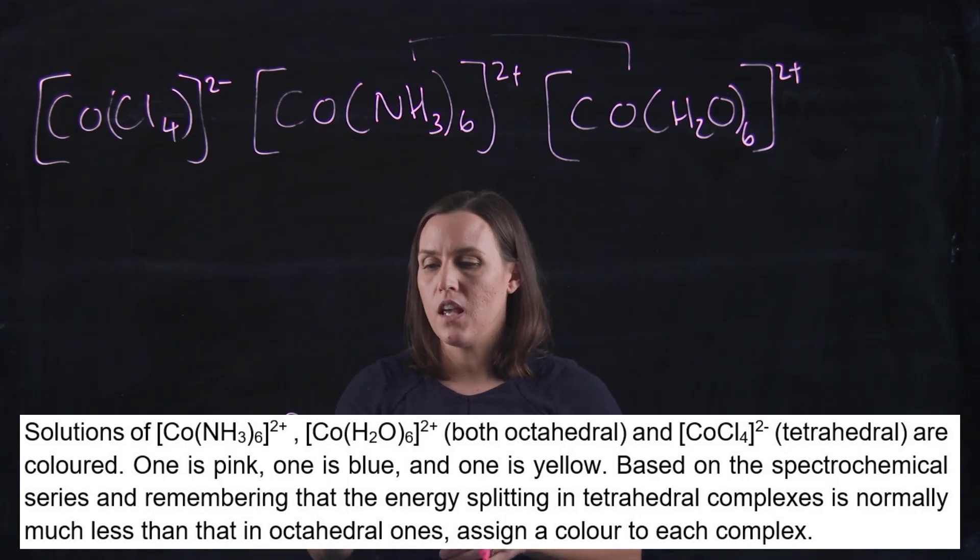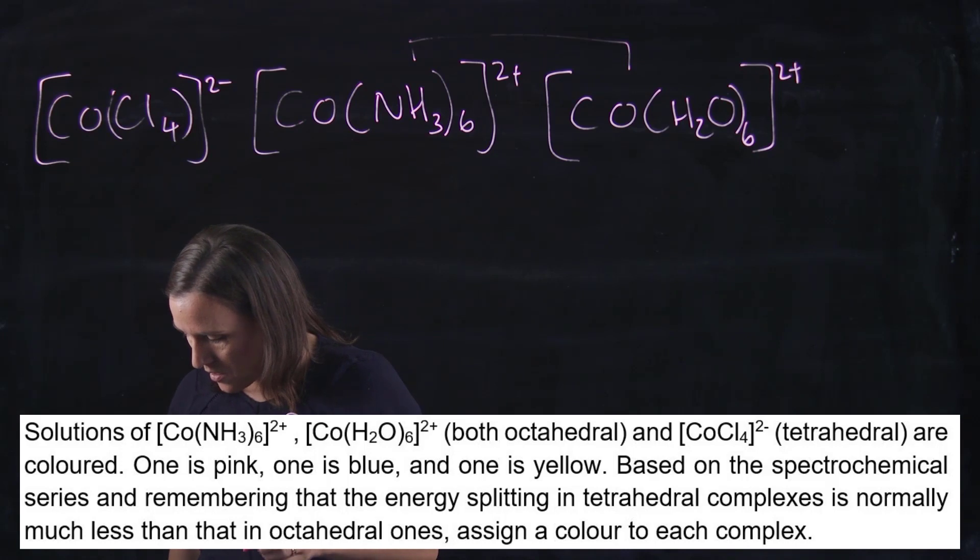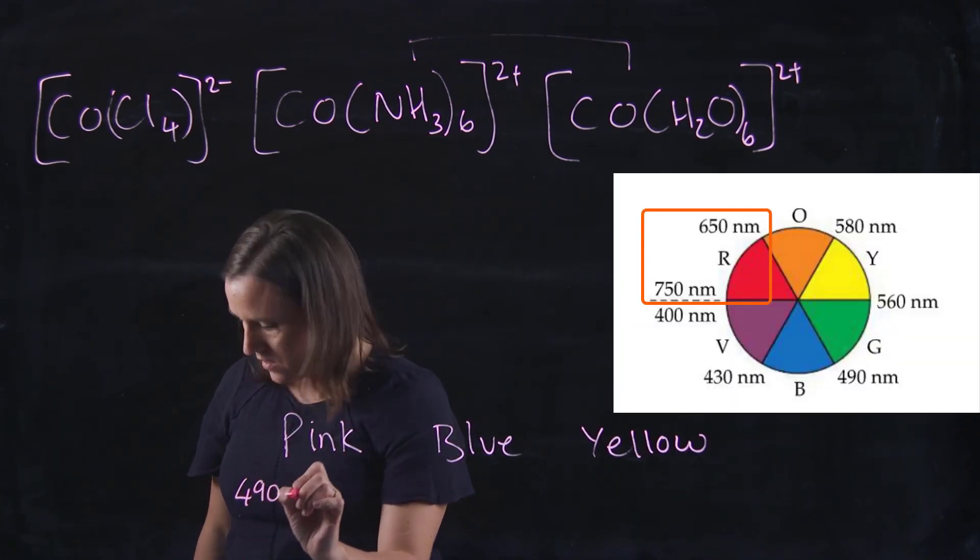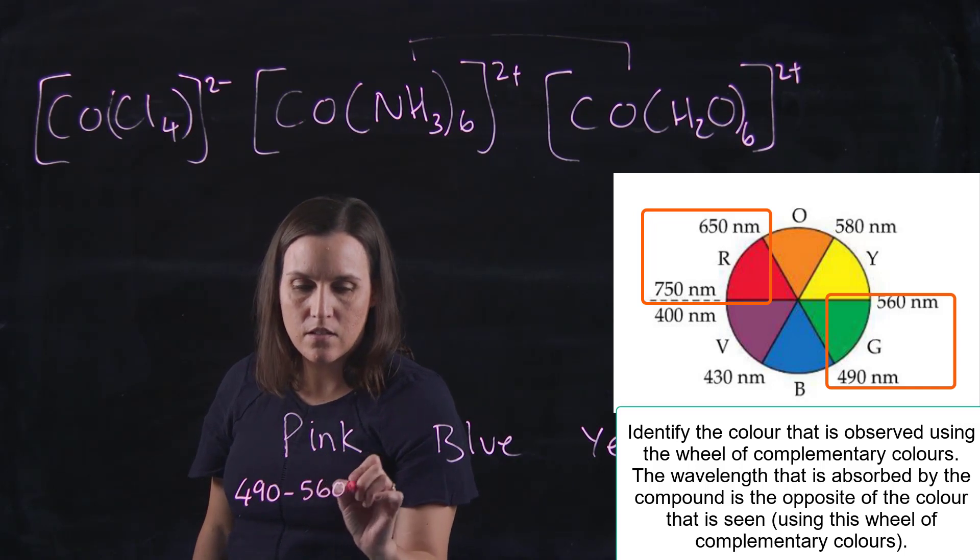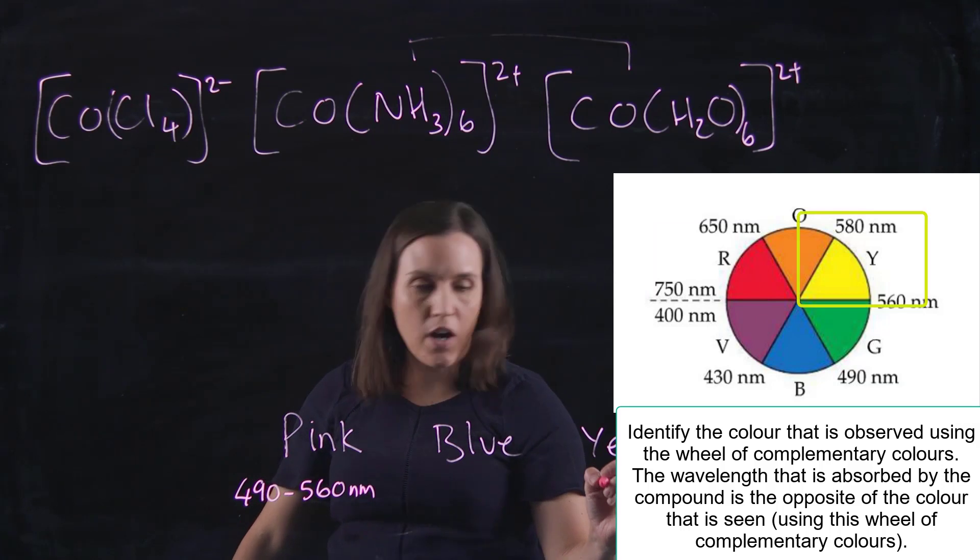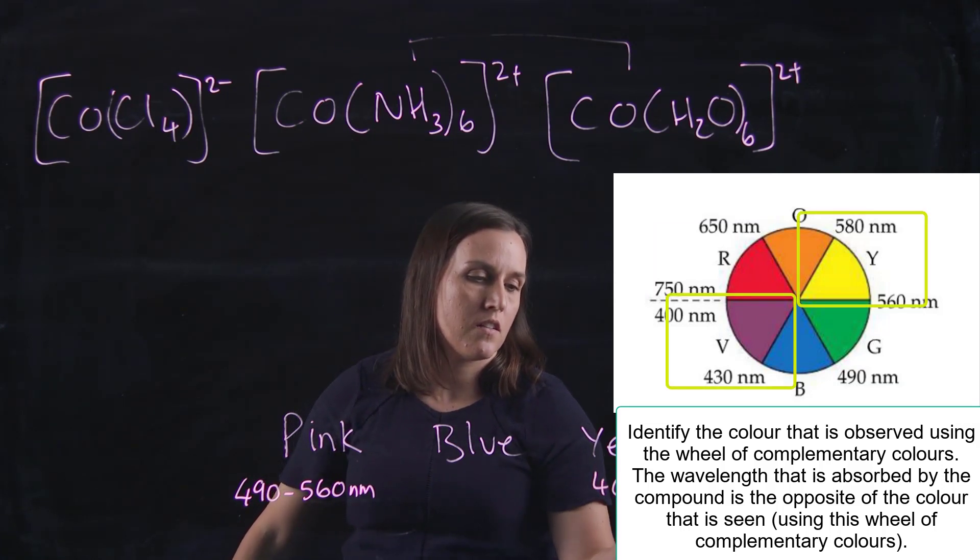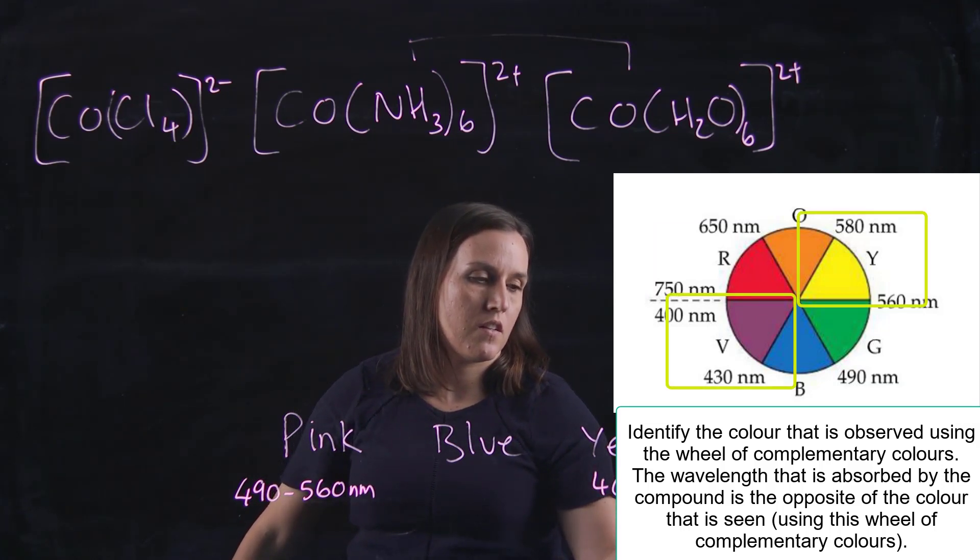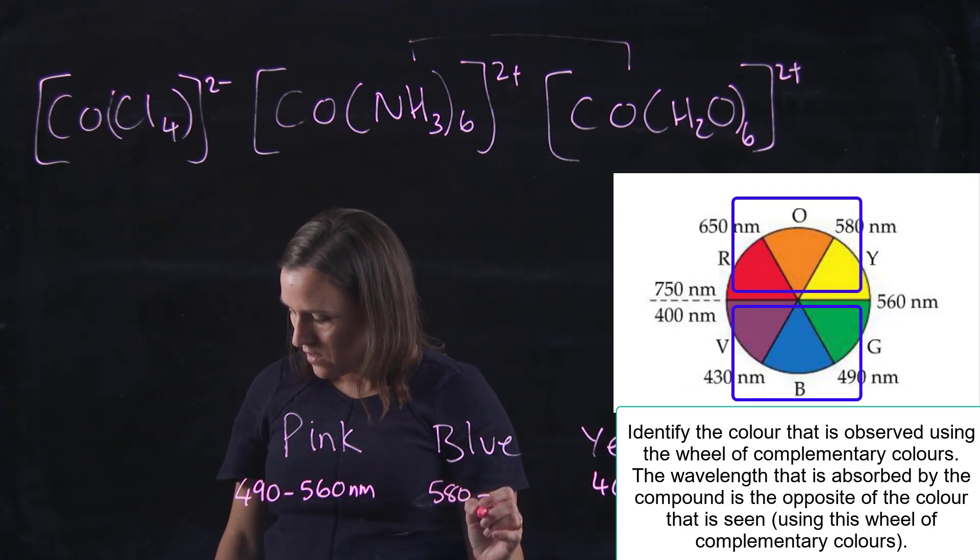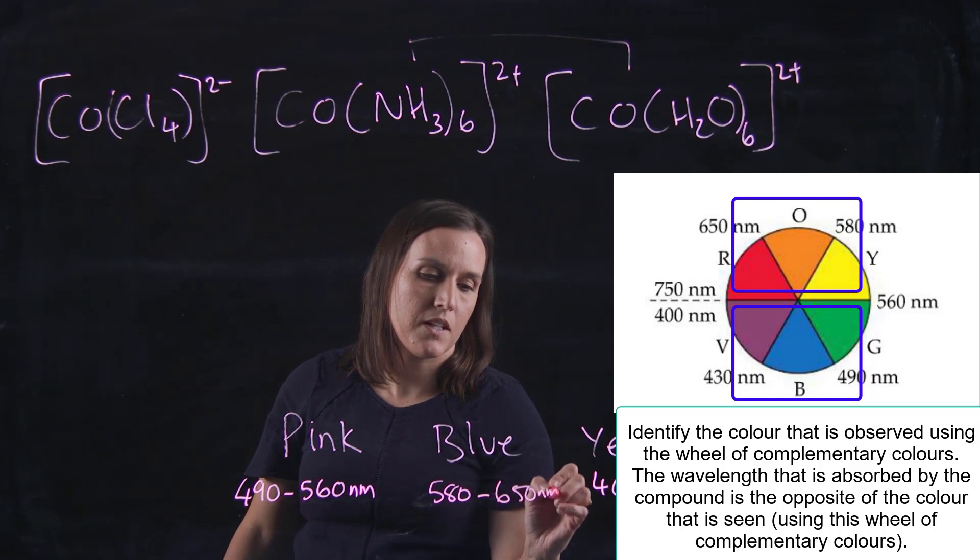Pink is 490 to 560 nanometers thereabouts, yellow is 400 to 430, and blue is 580 to 650 nanometers.